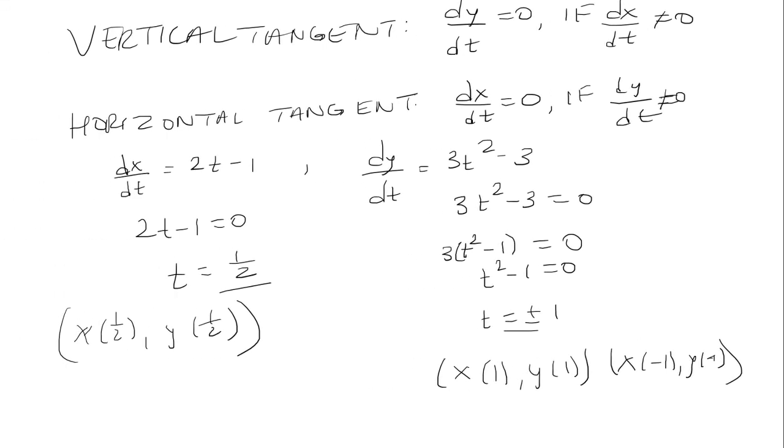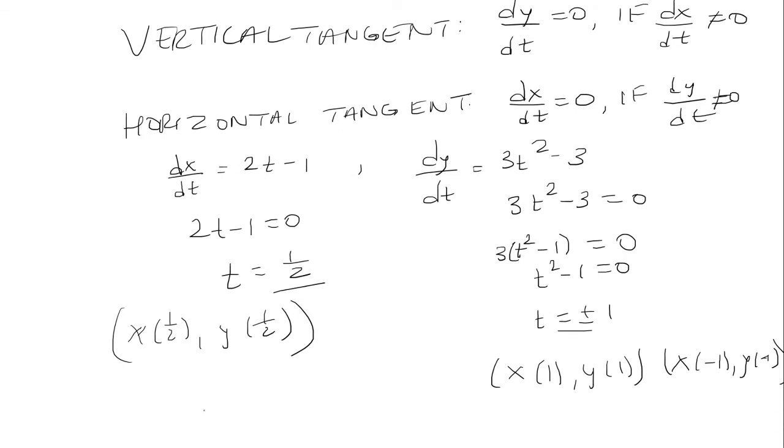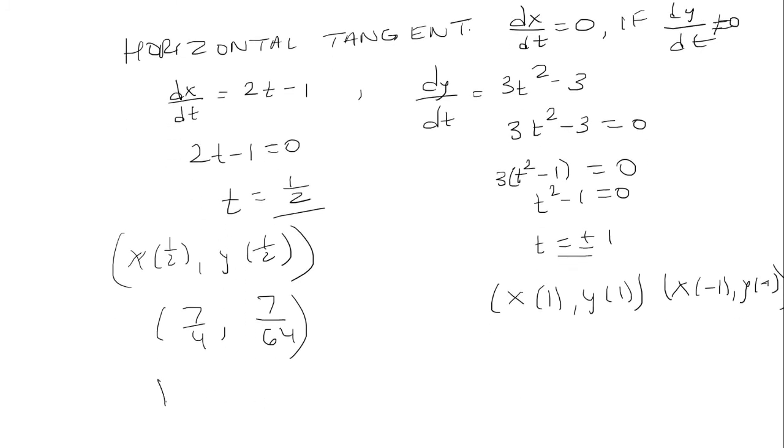So we said that x of t was t squared minus t plus 2. So if I plug in one half I end up with seven fourths. And if I plug in t equals one half into t cubed minus 3t, that would be 7 over 64. So this is the one that is the horizontal tangent. For the step where you plug in t back in, just use a calculator.